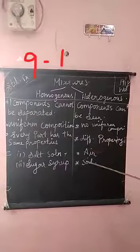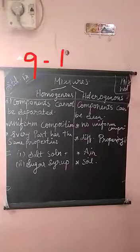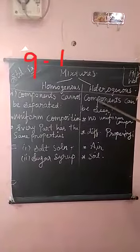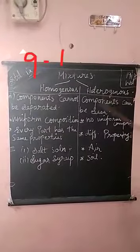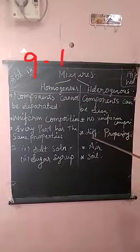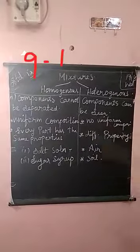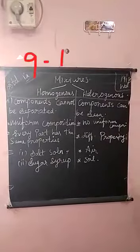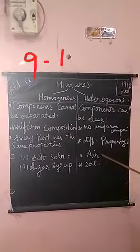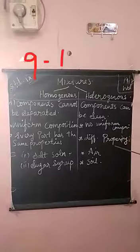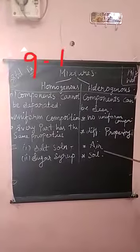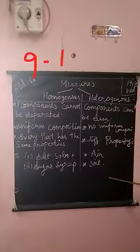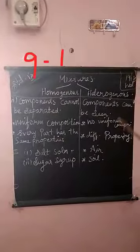The third property: you can differentiate the property of sand and water. So the properties of heterogeneous mixtures are: the components can be seen, no uniform composition, and different properties — you can differentiate the property. Air is an example of a heterogeneous mixture, because air contains carbon dioxide, nitrogen, water vapor — all are mixed together in air. Soil is also an example. These are the examples for heterogeneous mixtures.